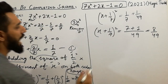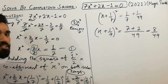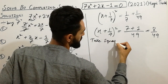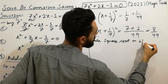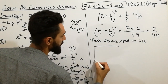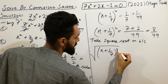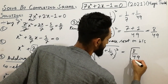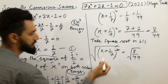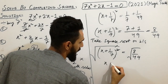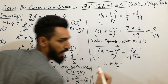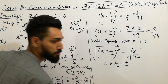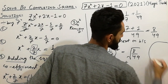Now you have to remove the sign of the square. So you have to take the square root on both sides. Taking the square root on both sides: square root of x plus 1 over 7 completing scale equals square root of 8 over 49. When we remove the square with the square root, we get x plus 1 over 7 is equal to plus or minus square root of 8 over 49.